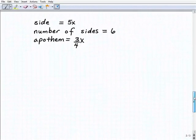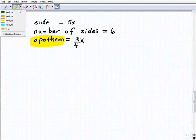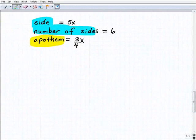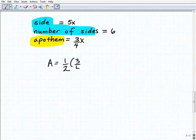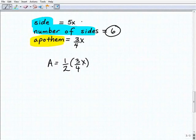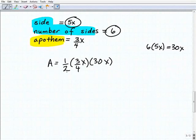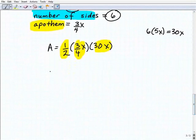Let's go ahead and take a look at our last problem. So in this scenario, what we're dealing with is variable expressions, but the same process is going to apply. All right, so we have our area equals to 1 half the apothem, which is going to be 3 fourths x, times the perimeter. And of course the perimeter is going to be the number of sides times the length of one side or 6 times 5x or 30x. So we'll put that right here. All right, so you have 1 half times 3 fourths x times the 30x. So once again, you got to simplify to get your final answer.